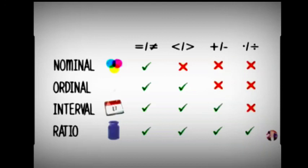The next one is ratio scale. The ratio scale possesses the characteristics of nominal, ordinal, and interval scales — so all three categories of features are included. It also possesses additional characteristics: it has an absolute zero value. Weight and height are examples of ratio scale. All mathematical calculations — addition, subtraction, division, and multiplication — are meaningful in the ratio scale.